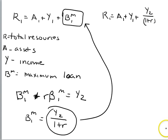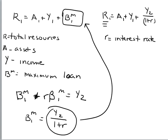Where R is the interest rate. I have now stated the total amount of resources in year one in terms of assets, income in year one and two, and the interest rate. Remember, we assumed the household spends all income in our one-period model. If we assume a household could spend all of its present and future income in one period, another way to state R1 is: price of consumption times maximum consumption in year one equals total resources.